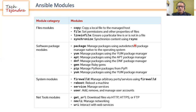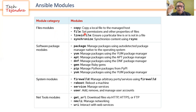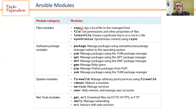Now let's talk about Ansible modules. Ansible provides many types of modules. For example, there are file modules, software package modules, system modules, and net tools modules. In file modules, we have 'copy' — which copies a local file from your machine to the managed host — and 'lineinfile', which lets you check whether a file contains a specific line. With the copy module, you can copy either a file or content into a file.